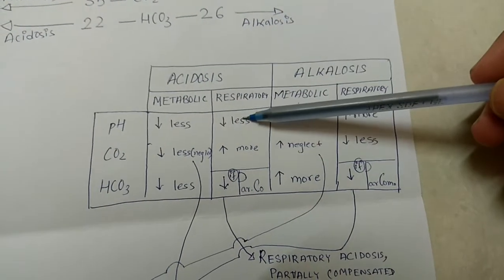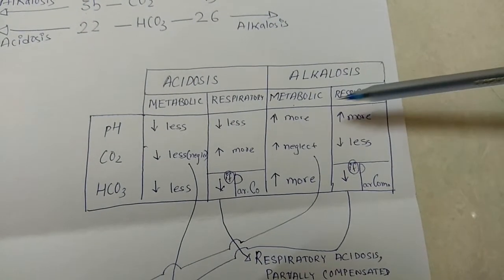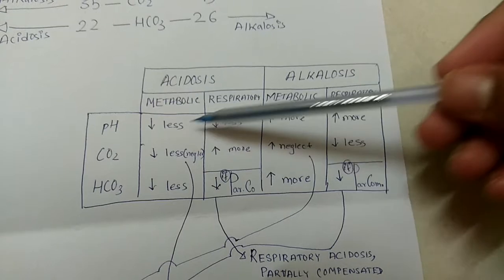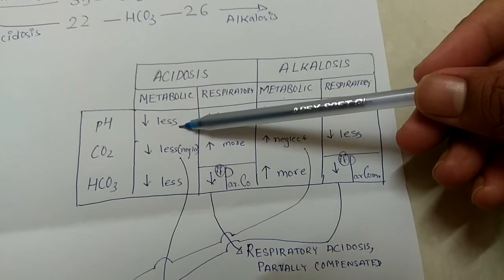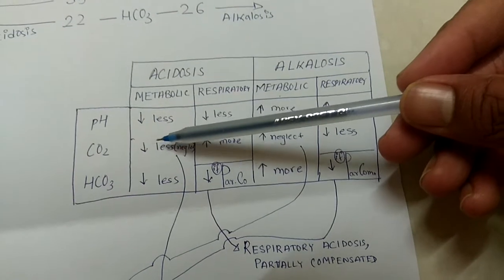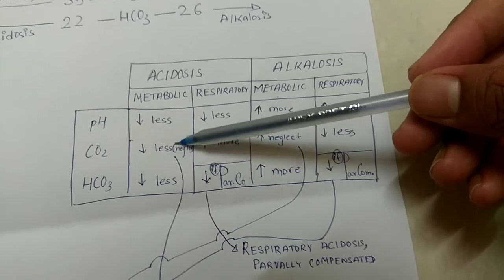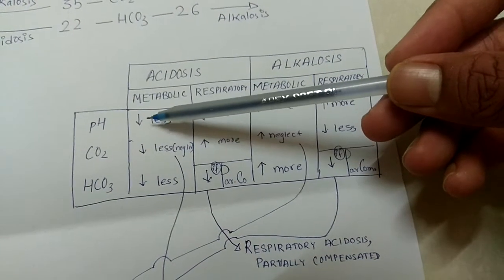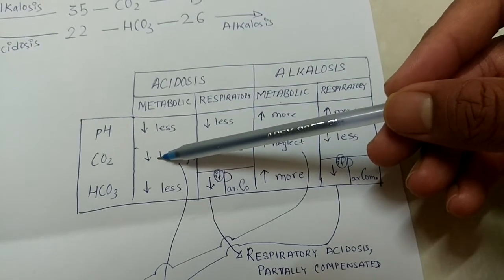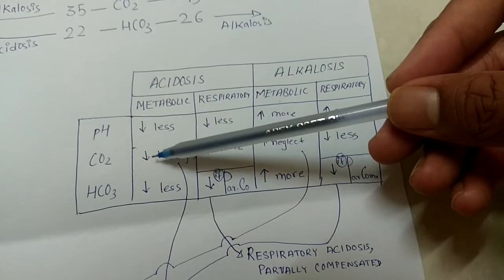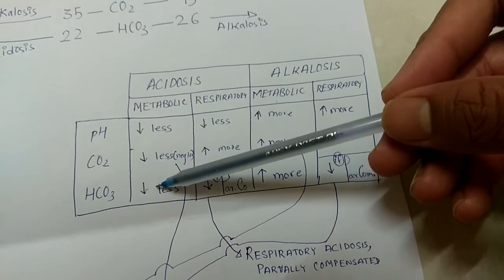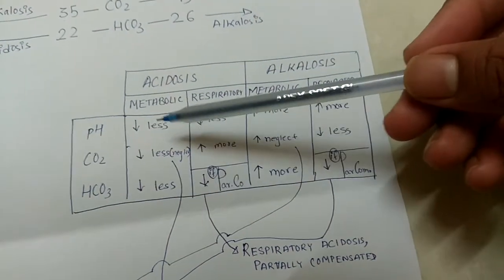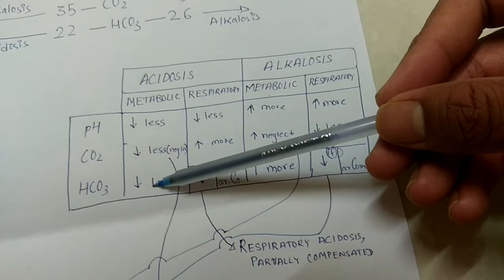Acidosis means the pH will be lesser; alkalosis means pH will be more. In metabolic acidosis, the pH is less and if CO2 is also less, it is compensating because CO2 should move in the opposite direction. If pH and HCO3 go in the same direction and CO2 goes in the opposite direction, this indicates metabolic acidosis with compensation.